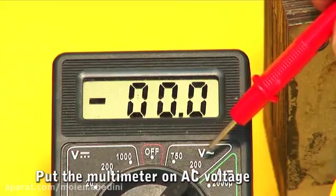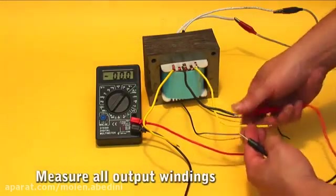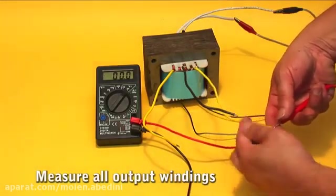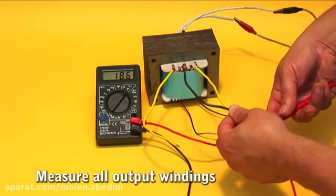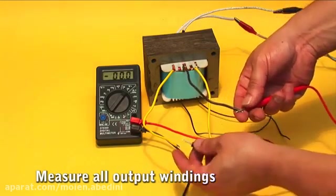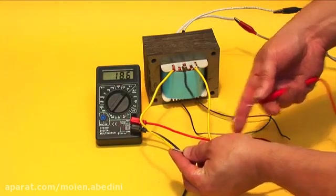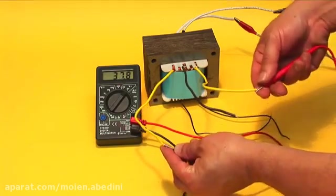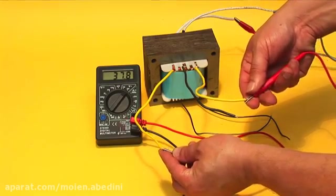With the multimeter on AC voltage scale, place one end on the right end of the secondary winding and the other in the central tap. You should mark the desired voltage, in this case 18V AC, as well as between the left and central tap. Measure between the two ends of the secondary winding. You should mark twice, in this case 36V AC.